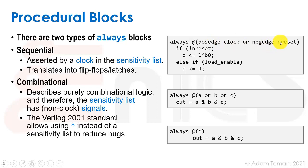We may also have a reset and we use non-blocking assignments for sequential blocks. A combinational block on the other hand is an always block that has in its sensitivity list a bunch of signals. Here we have always at a or b or c, but we could replace that with the star notation, which came in Verilog 2001 and reduces all kinds of bugs. It takes all the right-hand side parameters and sticks them in the sensitivity list automatically, so anytime there is a change in a, b, or c we go into this always block and figure out the new value of out.